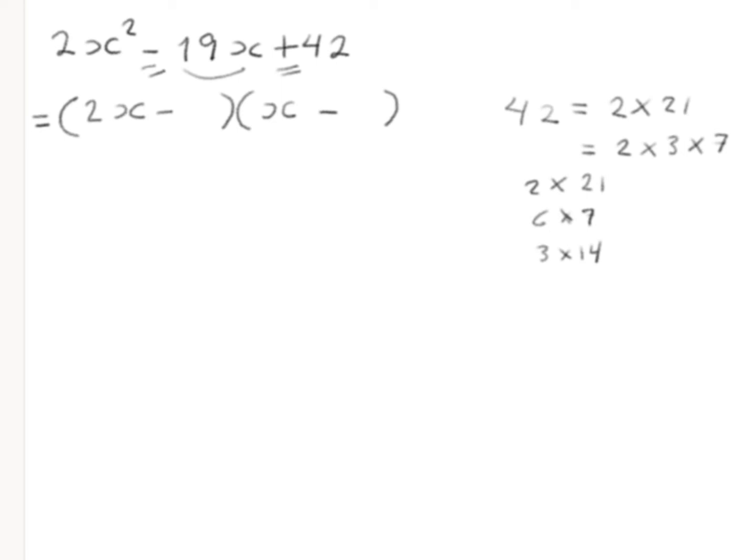If you put here 7, suppose you think 7 here and 6 here, you will get negative 6x and here negative 14x. So you get negative 20x, not equal to negative 19x. So this is false factoring.